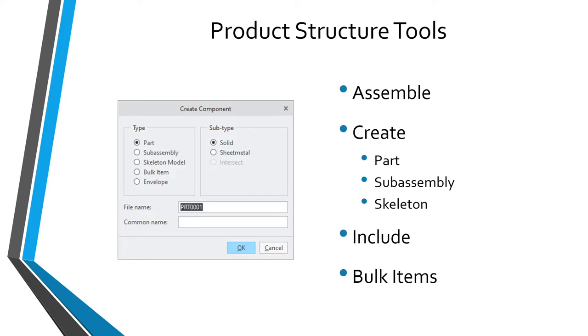A fourth tool for defining your product structure is to create bulk items. Bulk items are created from the Create Component dialog box, just like creating parts, sub-assemblies, and skeletons. Bulk items are for things you want to represent in your bill of materials but are not physically going to model — for example, things like paint, oil, other lubricants, or even staples or carpet.